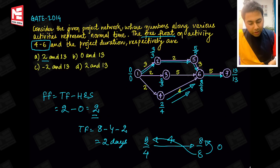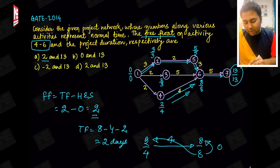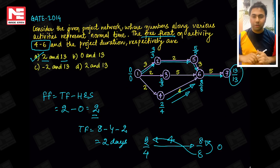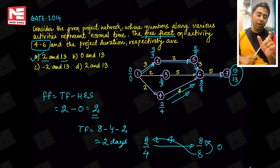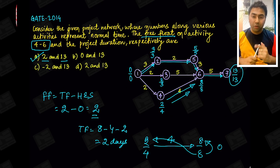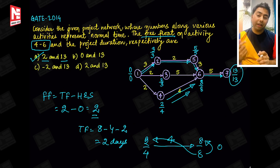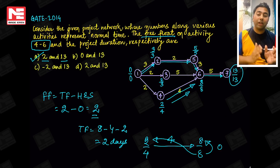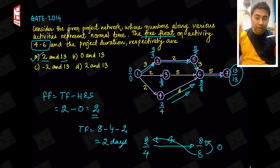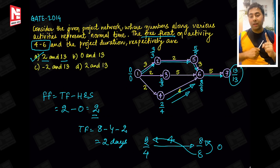Duration equals 13. So the answer is: total float equals total float. Head event slack minus total float gives you free float. And if you have tail event slack minus free float, then you will get independent float. The concept is very very clear.